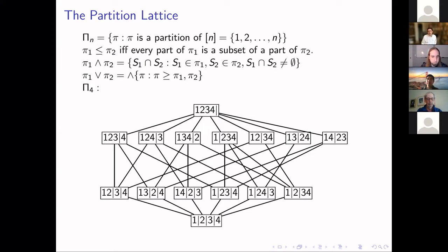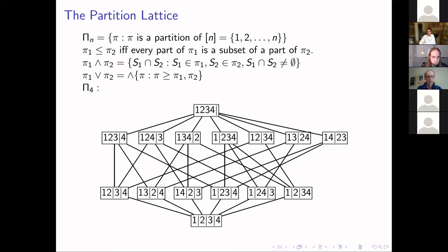We're going to start our story with four partially ordered sets, three of them lattices. The first lattice is the partition lattice, capital Pi_N. You collect all the set partitions of the standard N-element set {1, ..., N}, and you put a partial order on this by setting Pi_1 ≤ Pi_2 if every part in Pi_1 is a subset of a part in Pi_2. Another way to think of this is you obtain Pi_2 from joining parts in Pi_1 until you reach Pi_2.